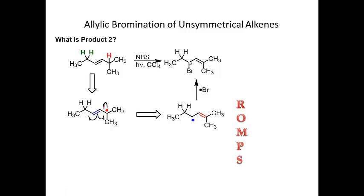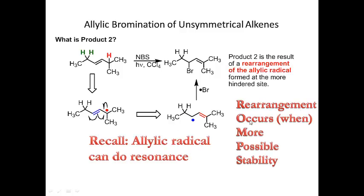Think of this in terms of the mnemonic ROMPS: Rearrangement Occurs when More Possible Stability. I'm going from a di-substituted alkene to a tri-substituted alkene. The more substituents the double bond has, the more stable it is. So if I'm able to rearrange to get a more stable double bond in the product, the rearrangement is going to happen. And remember, this is just resonance — there's no magic happening here.